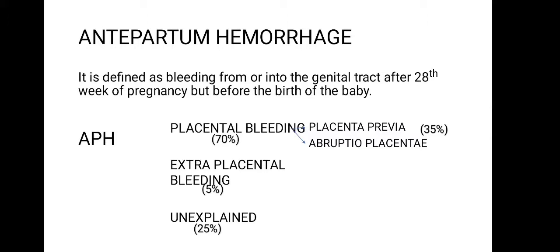Bleeding which occurs before the 20th week of pregnancy is known as abortion. Generally abortion occurs between 12 to 16 weeks, but according to WHO it is 22 weeks. So bleeding before 22 weeks is abortion, whereas bleeding after the 20th week is APH.